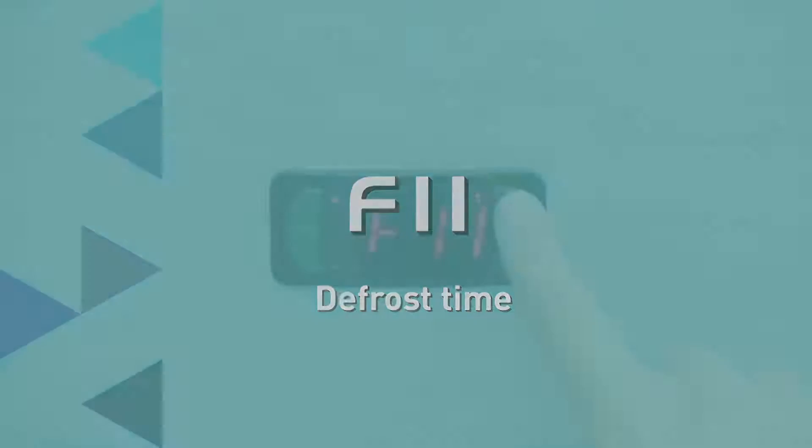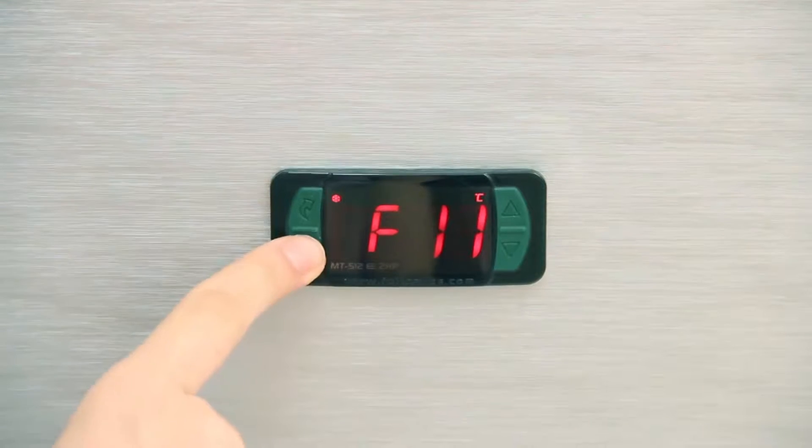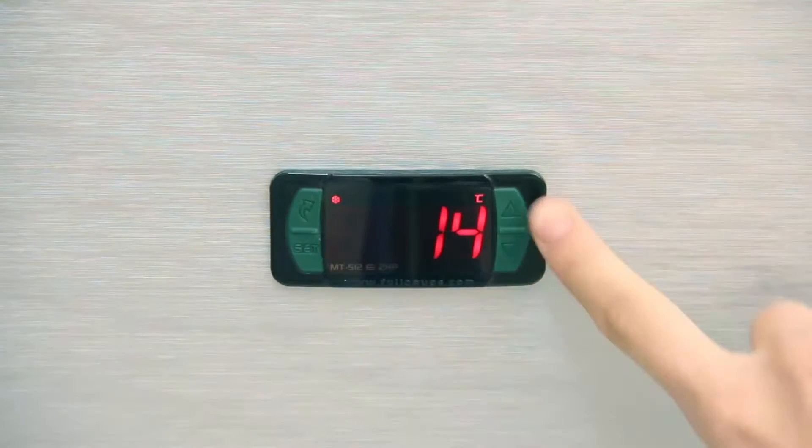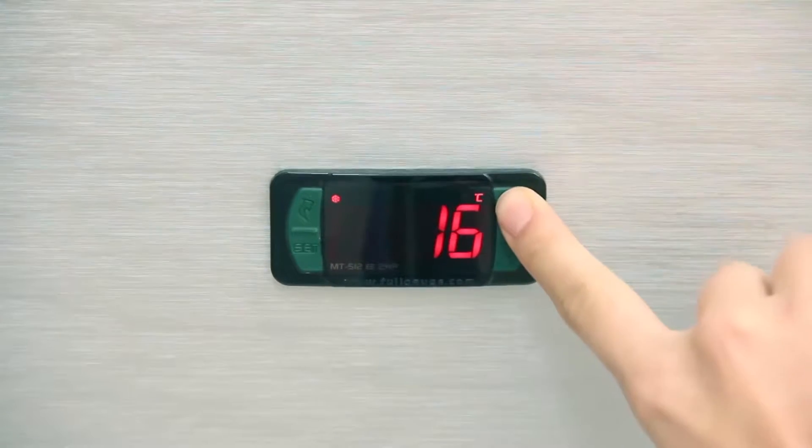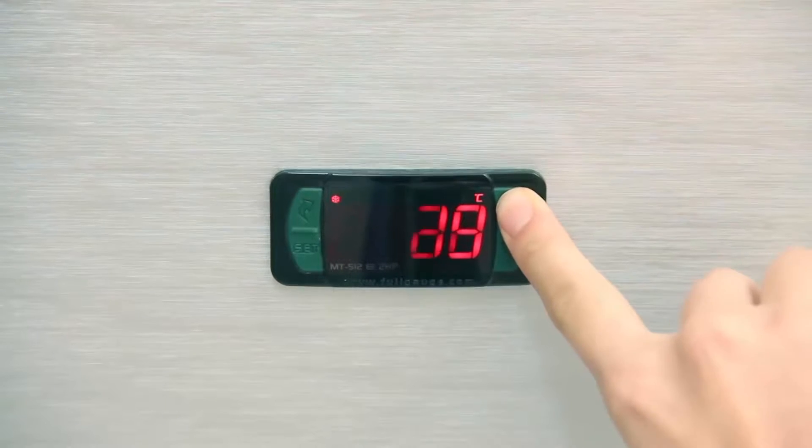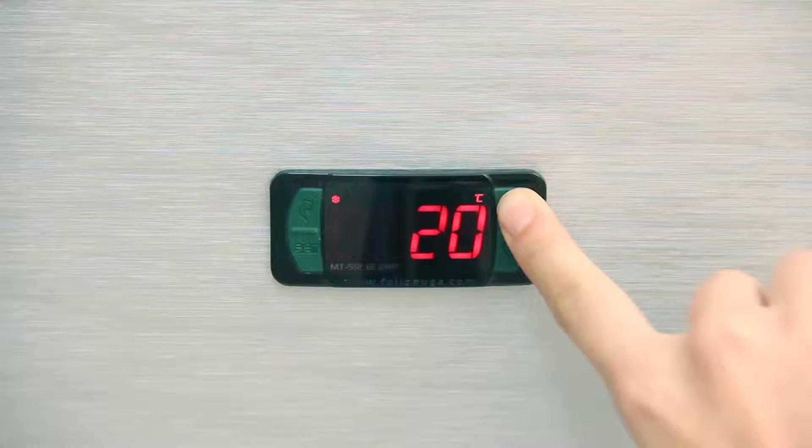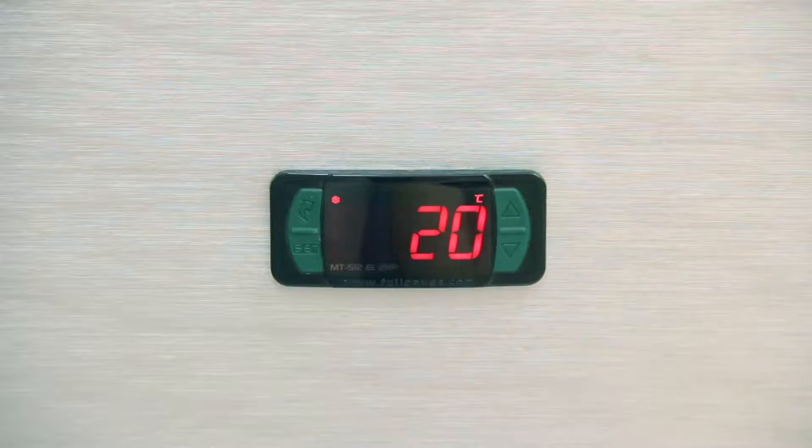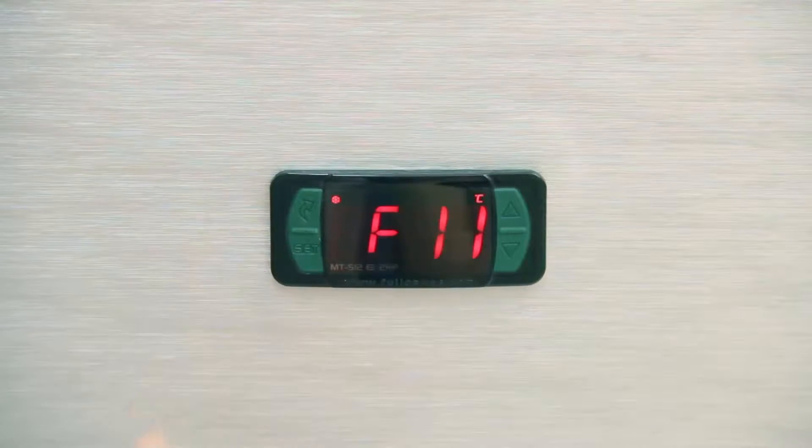F11, Defrost Time. It determines the minimum duration of the defrost time, that is, the time between cooling cycles. Select No, so as not to adopt a minimum time, or provide a value between 1 and 999 minutes. In this example, we determined a time of 20 minutes.